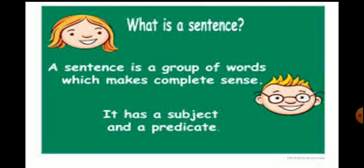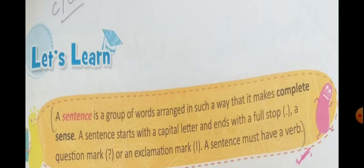You cannot arrange different groups of words and call it a sentence, because until and unless it makes sense it doesn't become a sentence. From page number 77 you will see that a sentence is a group of words arranged in such a way that it makes complete sense. A sentence always starts with a capital letter. All sentences start with a capital letter and it might end with a full stop, a question mark, or an exclamation mark. A sentence must always have a verb.